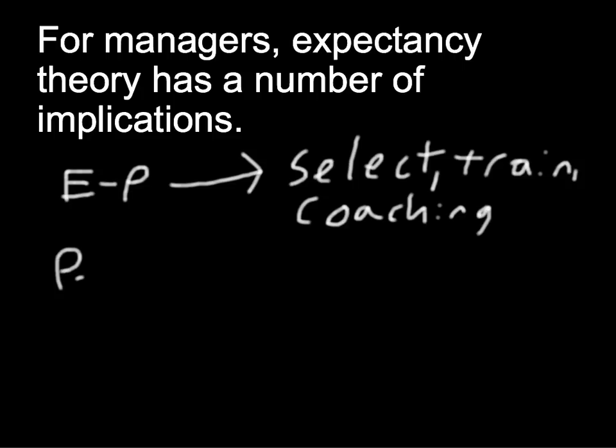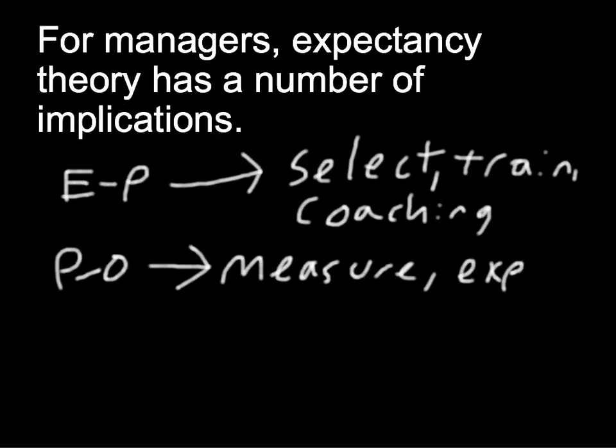Secondly, we can think about the P-to-O expectancy. The goal here is to increase the belief that good performance is going to get them some sort of outcome. Some things that managers can do along these lines are measure job performance accurately. They can also clearly explain outcomes so that people understand them. They can also describe how employees' rewards are based upon past performance, maybe also provide examples of other employees whose very high levels of performance have resulted in higher rewards. So, they can see that link a little bit better.